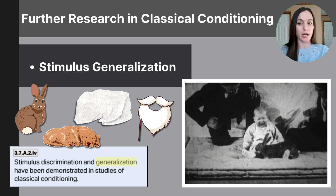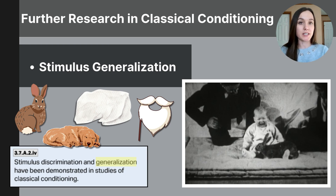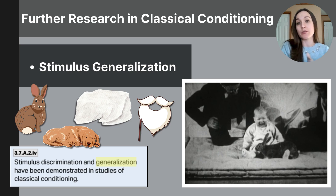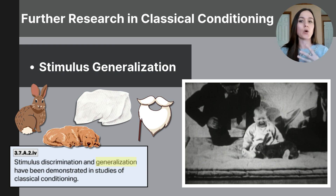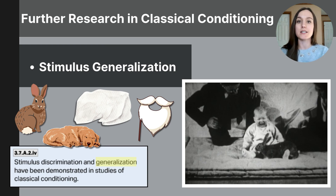These objects included a rabbit, a dog, a seal skin coat, and a Santa Claus mask with a fuzzy white beard. Although Albert had not been exposed to these items during the conditioning process, he showed a similar fear response to them. When presented with the rabbit, the furry coat, and the bearded mask, he demonstrated the same fear response as with the white rat. This reaction occurred because the objects shared similar characteristics — particularly their soft texture or white furry appearance. Watson and Rayner concluded this was a classic example of stimulus generalization, where a conditioned response transfers to related objects or situations.